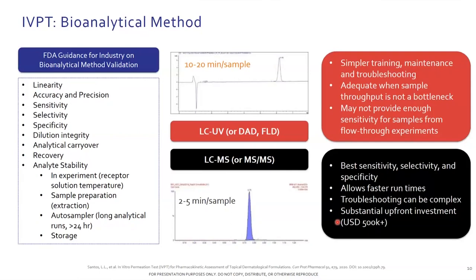Regarding bioanalytical method validation in the context of analyzing samples from IVPT, there are some peculiarities. Your analyte is going to be in a heated receptor solution — heated to keep the skin surface at 32°C — so you need to ensure your drug is stable under those conditions. You need to understand the chemical stability of your drug and whether modifiers in the receptor solution could affect analytical sensitivity or drug chemical stability. For sample preparation involving extraction or concentration, ensure these steps don't affect linearity. Bioanalytical method development can take considerable time in addition to IVPT method development itself.